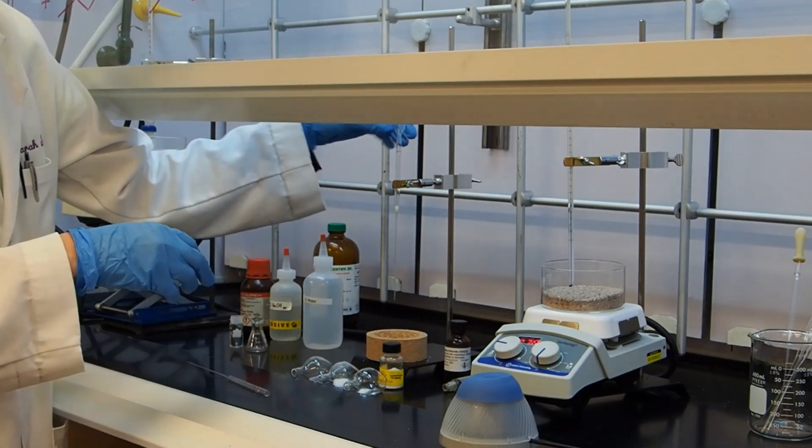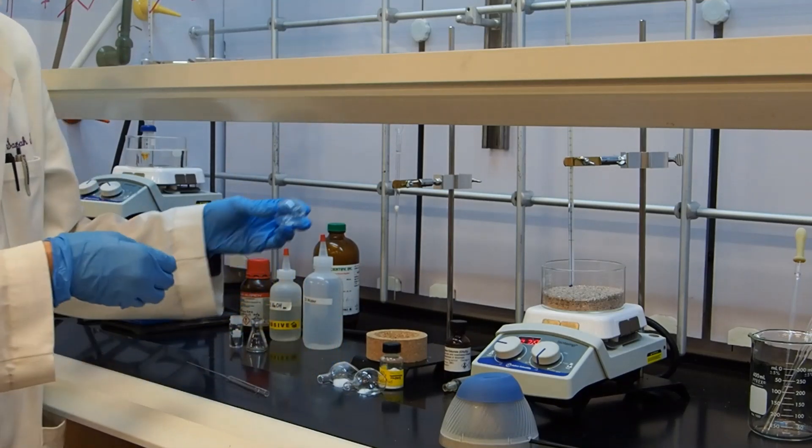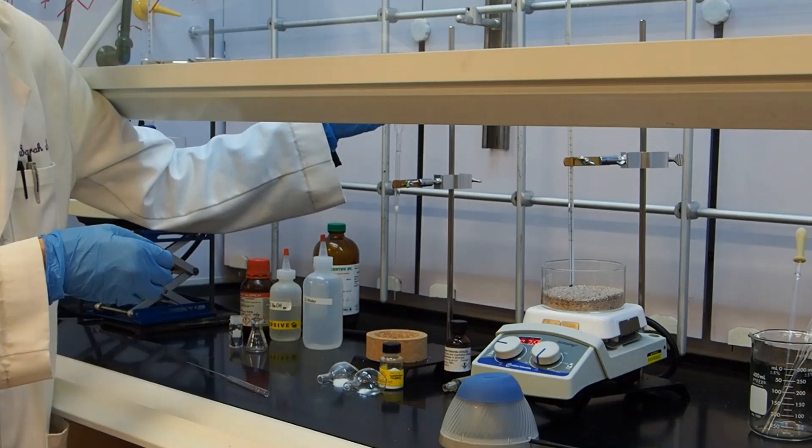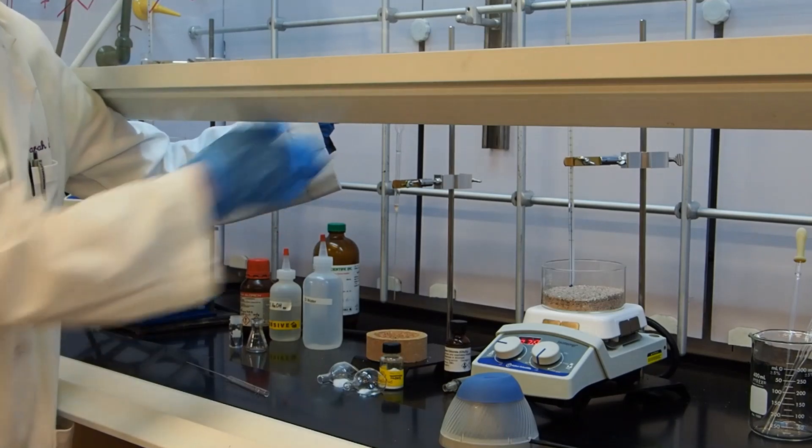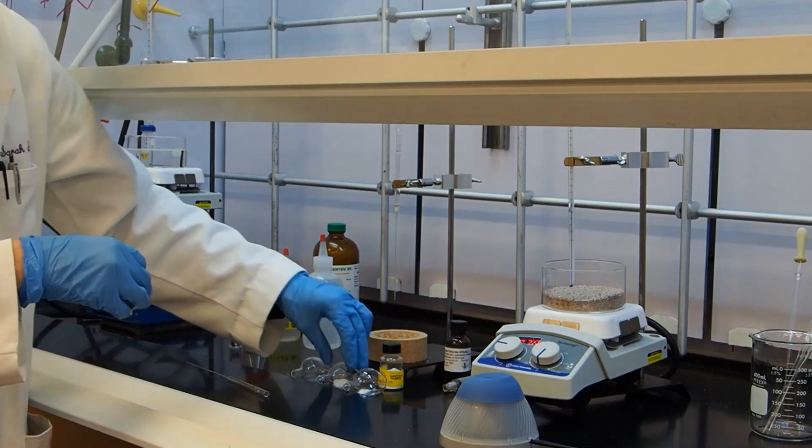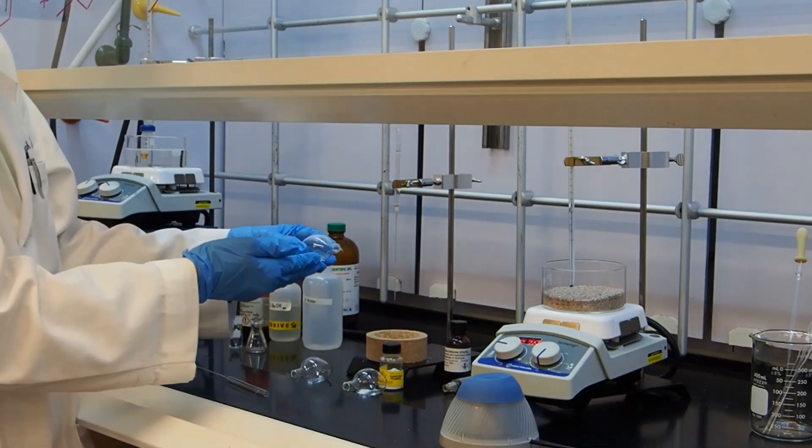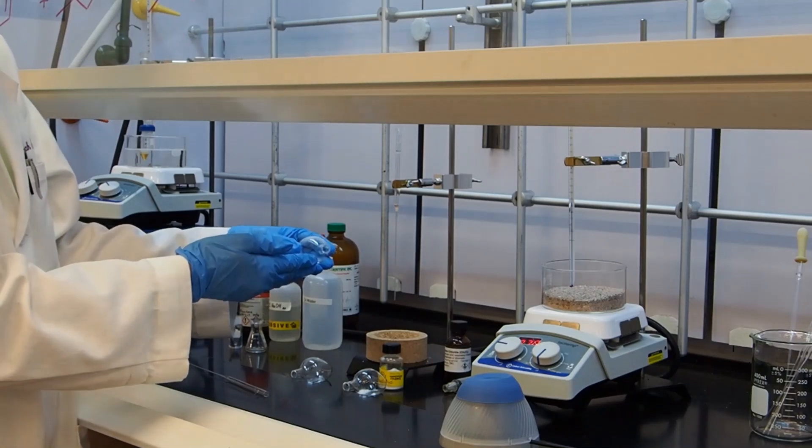I can put my funnel back on. I have to go in first about 50 milligrams of sand. That's going to keep the cotton from getting plugged up with silica gel. Next we have some fine silica gel, about 500 milligrams or half a gram.